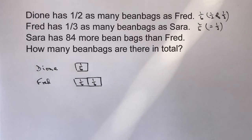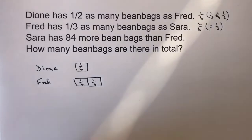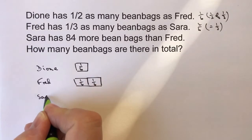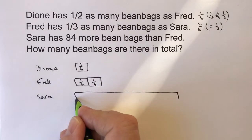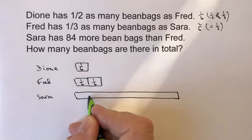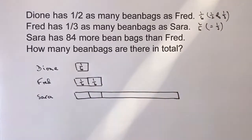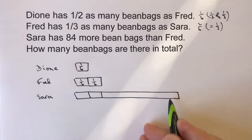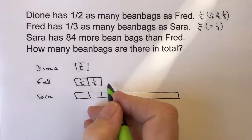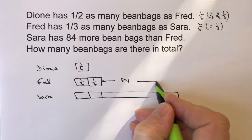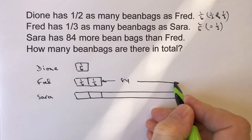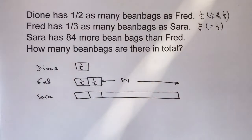Now let's look at Sarah. Sarah has 84 more bean bags than Fred. So if we draw Sarah here, Sarah has this many bean bags — she's got an awful lot. We know she's got a portion matching Fred's amount, but also this additional amount along here, which is made up by the additional 84 bean bags mentioned in the text.